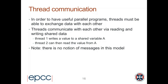If we want to get a value from thread one to thread two, thread one will write a value to some shared variable — let's call it A — and then at some point later, thread two is able to read that value from the same variable in the shared data space. The key point is that there is no notion of messages in this model — it's completely different from distributed memory models like MPI. Threads don't send messages to each other; they just communicate by reading and writing to their shared data space.